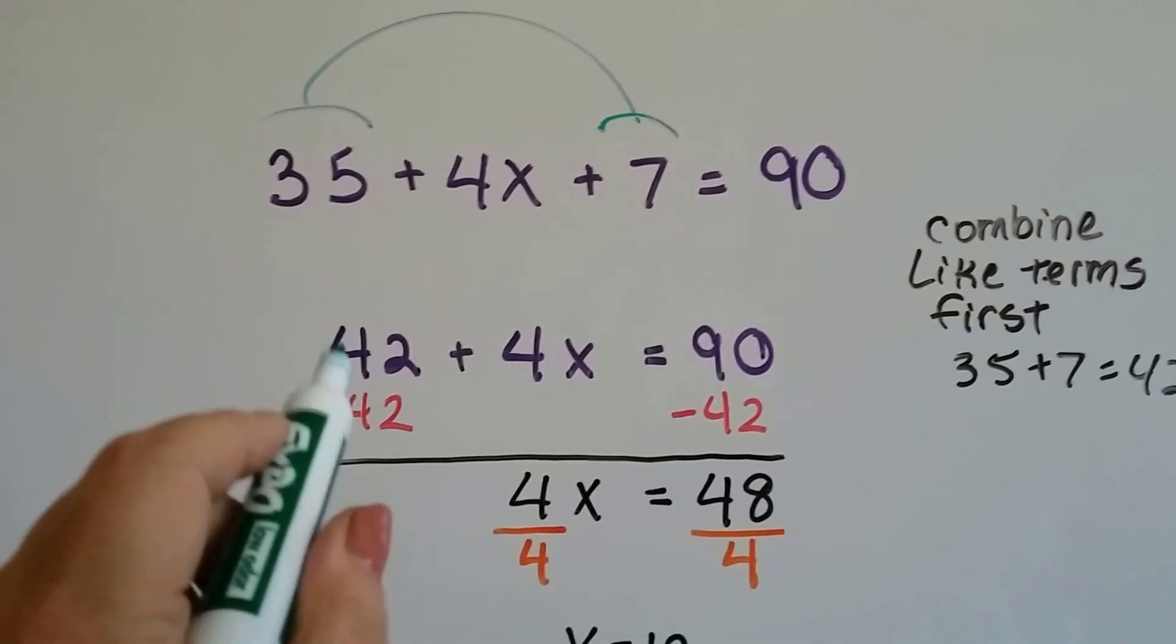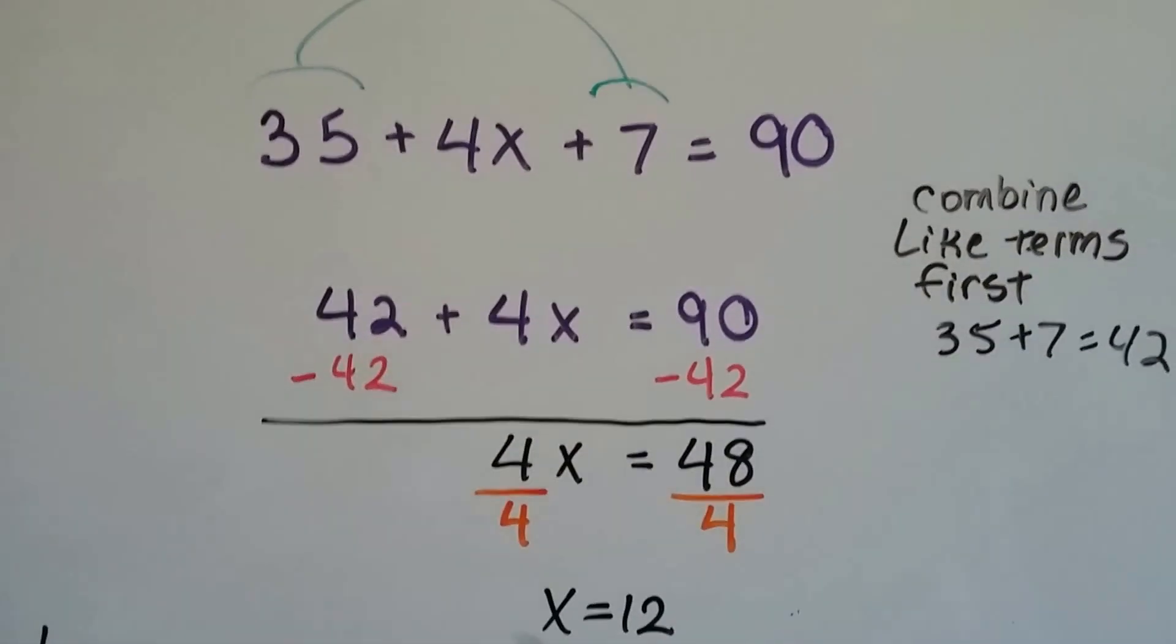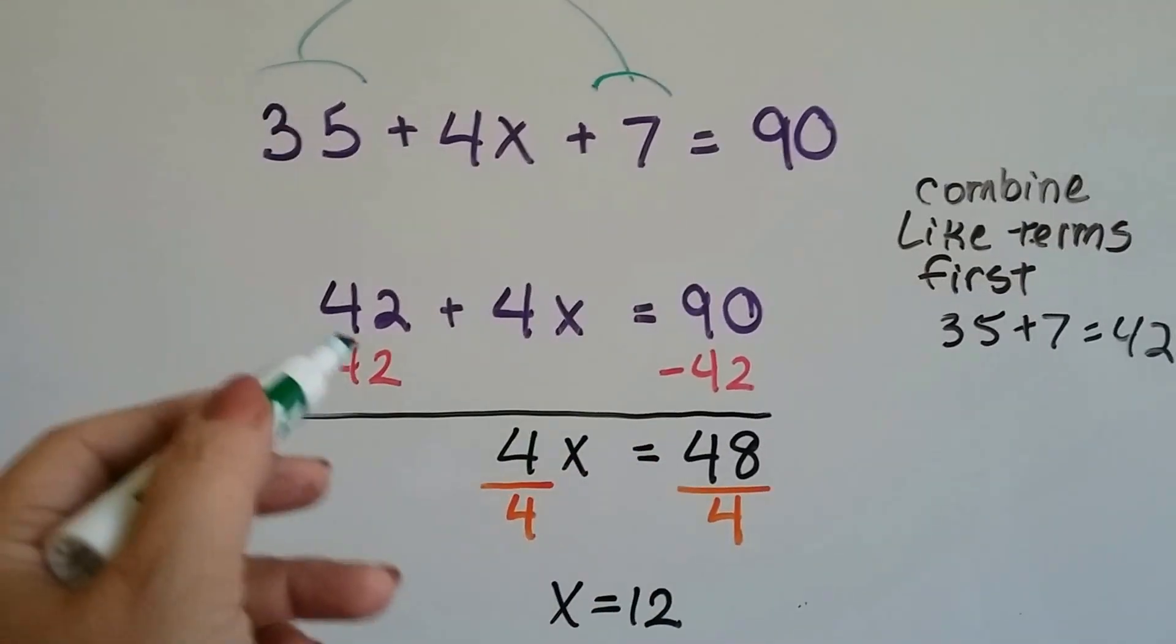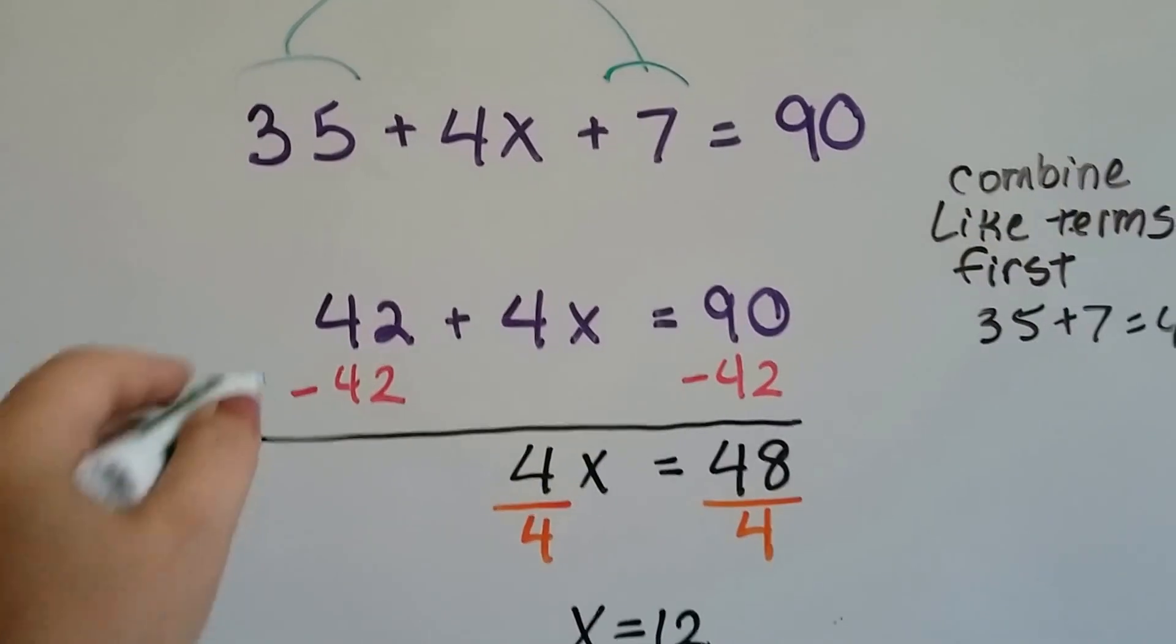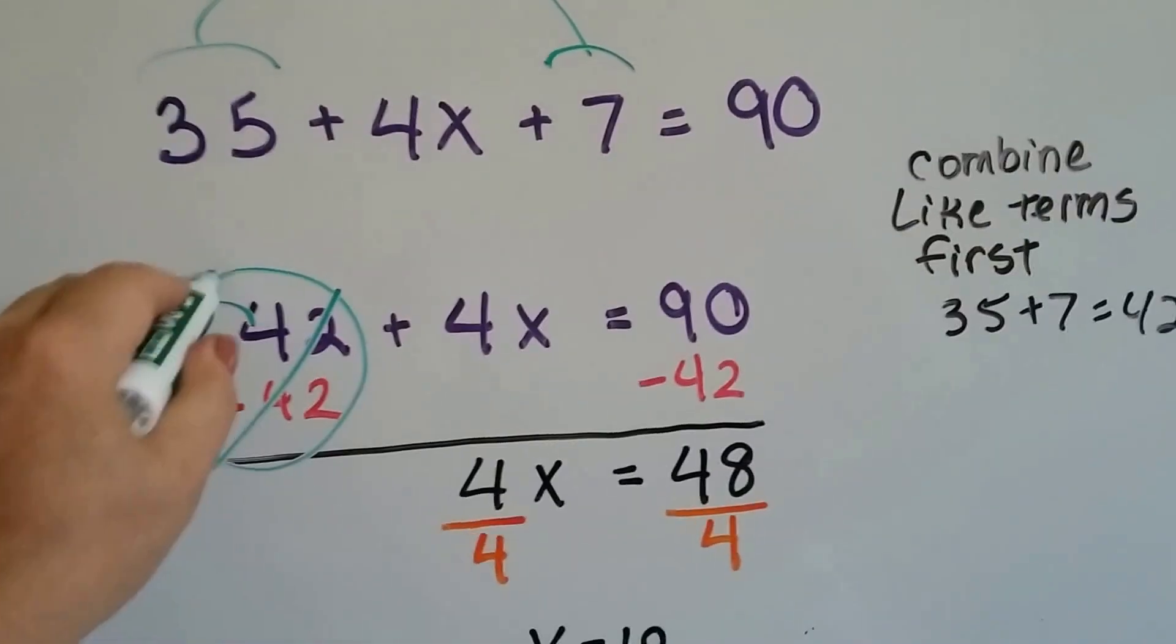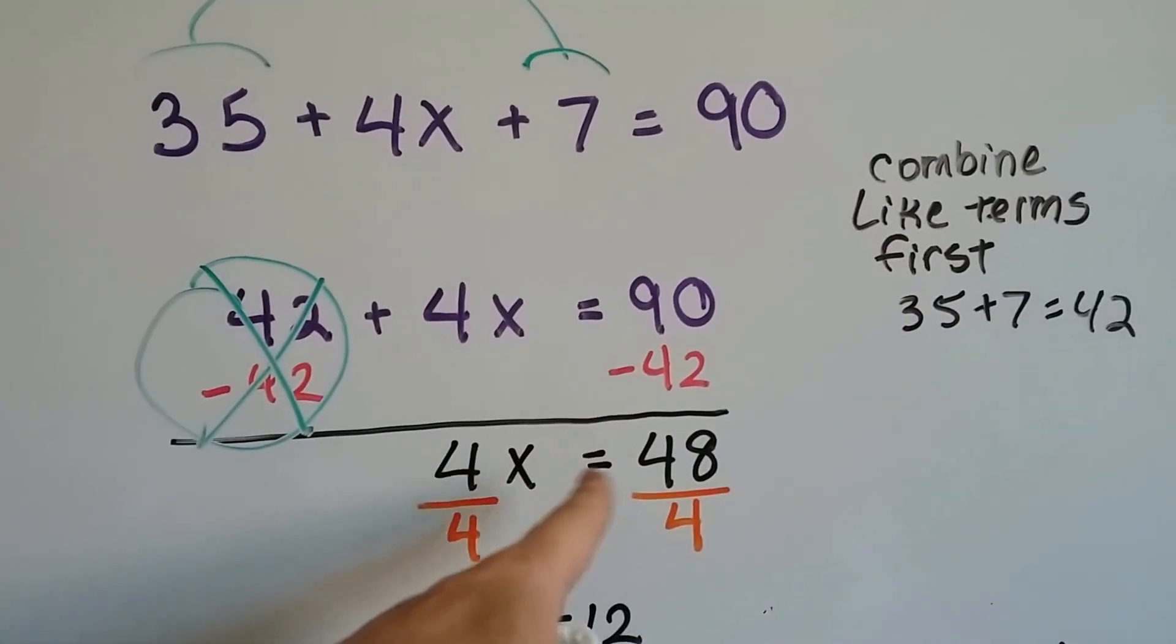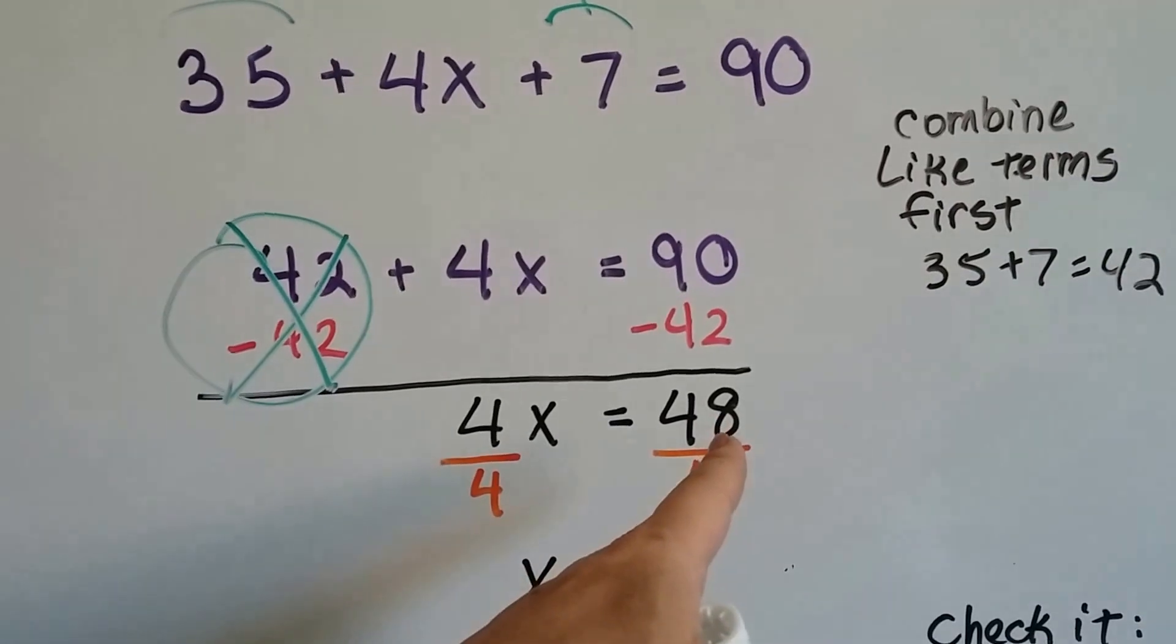So we rewrite the equation as 42 plus 4X equals 90. We can subtract 42 from each side as the inverse operation. That will create a zero pair here. And then we can drop down the 4X. 90 minus 42 is 48. So now we know that 4X equals 48.